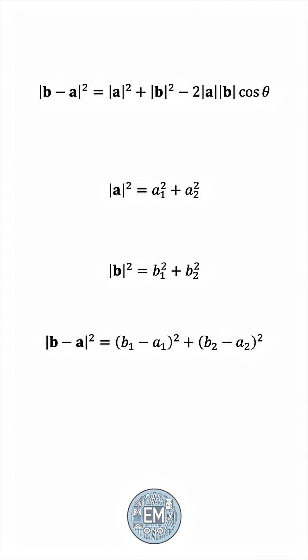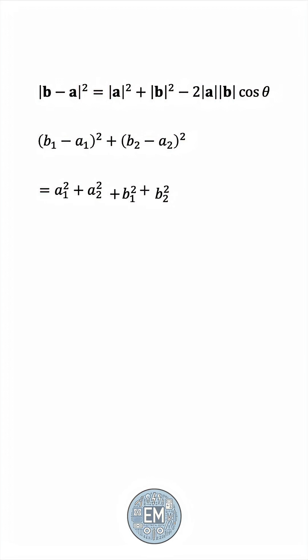The equation becomes: this is equal to this plus that, and then minus 2 times the length of a times the length of b times cosine theta.